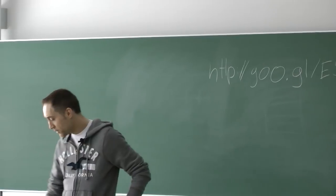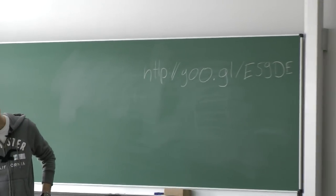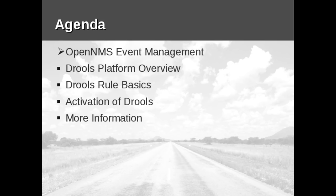Let's start by having a look at the agenda. I've divided my talk into five parts. In the first part, we take a closer look at what event management with OpenNMS means — more precisely, what is the difference between an event and an alarm, and what kind of rules we have here.